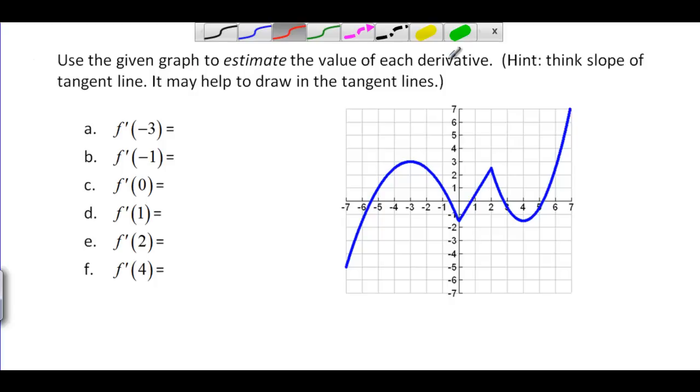So the first derivative it asks us to find, the first slope, is the slope of the tangent line at negative 3. So here's negative 3. I draw in a tangent line here and if I draw it well, it looks like it should be nice and flat. It's the top of the hill there. So anytime you have the top of a hill or the bottom of a hill like over here at 4, you're going to have a slope of 0.